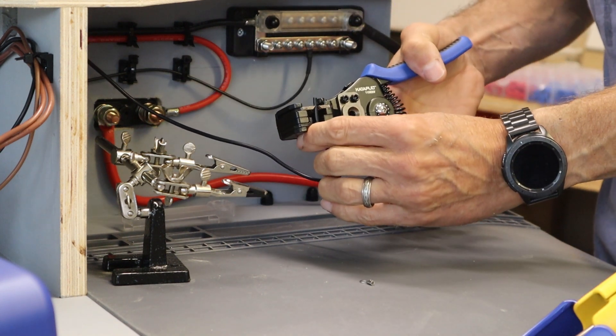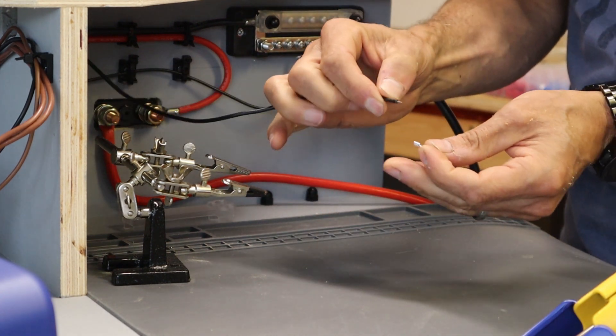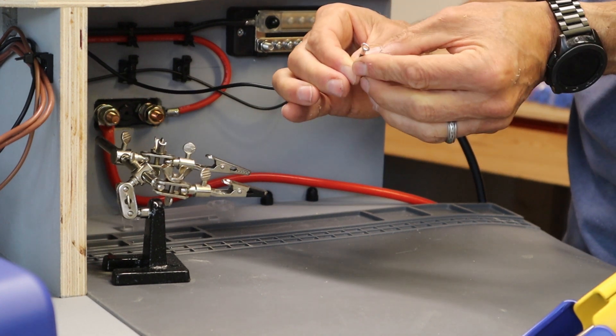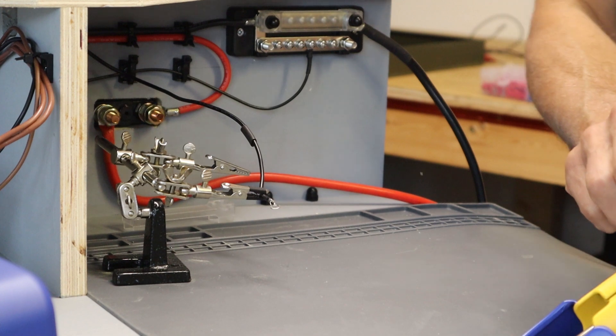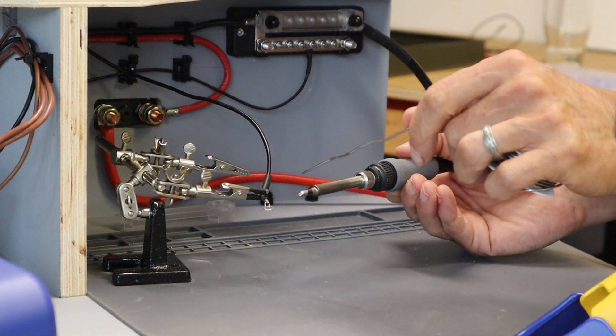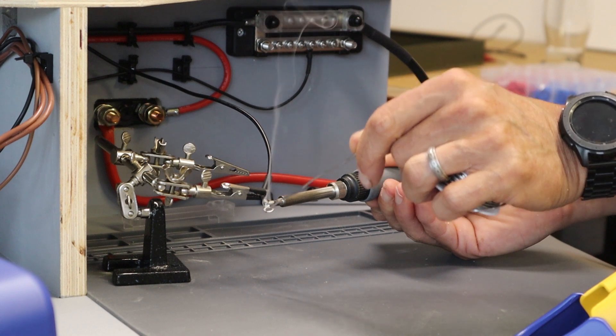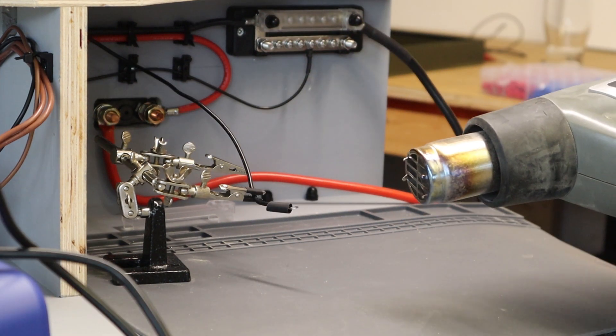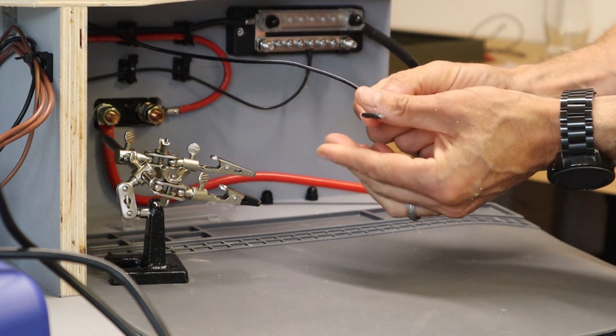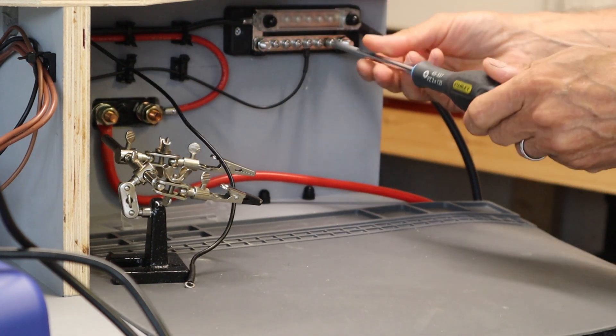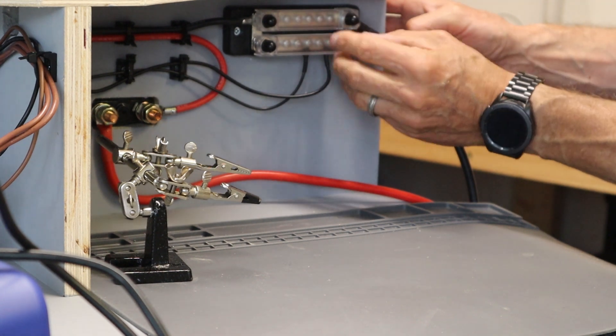We're going to put the heat shrink on. I'm going to strip the end of the wire. Put on the terminal. And I find these little clamps really handy. So let's get that soldered on and that looks all good to go. So that is the negative side taken care of.